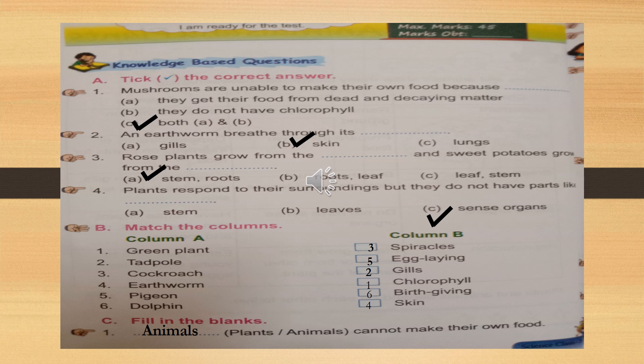Page number 10 in your workbook — previous class homework. Section A: take the correct answer. The first one: mushrooms are unable to make their own food. Option A — they get their food from dead and decaying matter. Yes, this is also true. And B — they do not have chlorophyll. That's also true. So these two are correct — A and B. So we tick C: both A and B are correct.